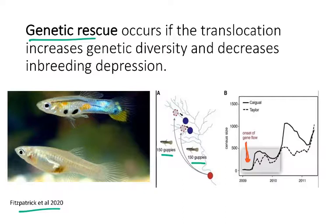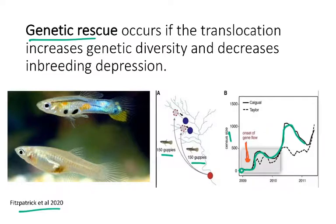At that point, the population size, shown on the y-axis, was very, very low. But what you can see is that through time, the population size actually increased a lot. Because we see this increased population, that is one sign of genetic rescue — it indicates translocation helps to increase the fitness of this population, and the population size was able to grow.